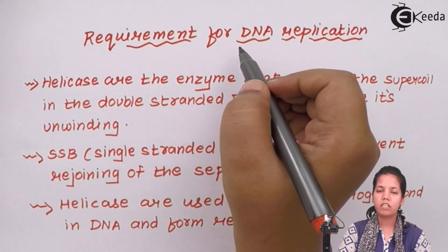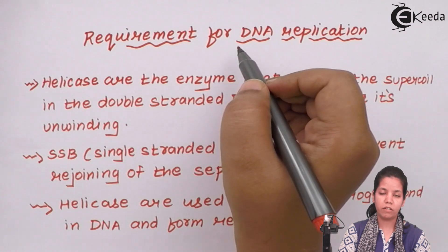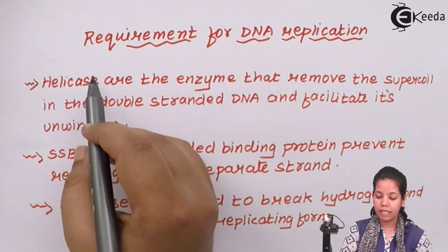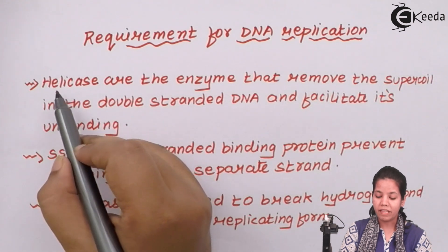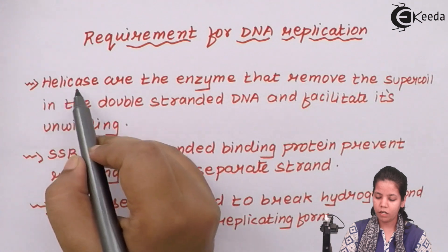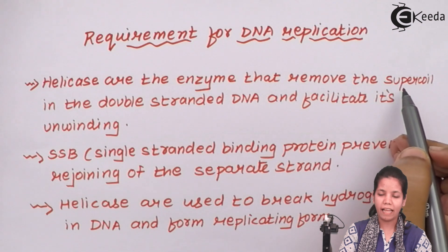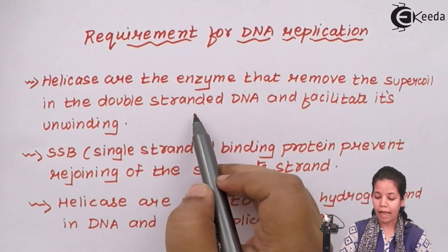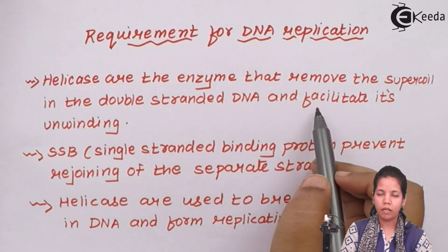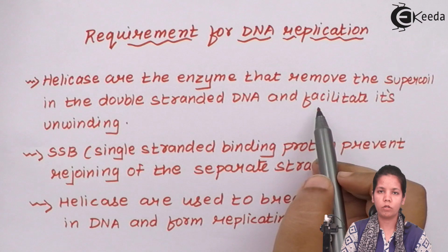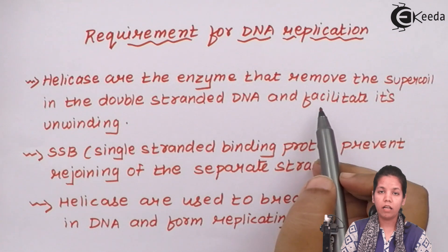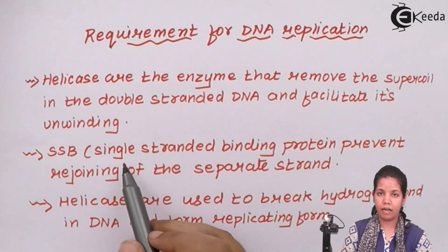For DNA replication to take place, there are certain enzymes required. The first enzyme needed is helicases — an enzyme that breaks the double-stranded helix of DNA. Helicases help to remove the supercoils or tangles in the double-stranded DNA molecule and facilitate the unwinding of DNA. Helicases break the hydrogen bonds so all the nitrogen bases are unpaired and exposed.